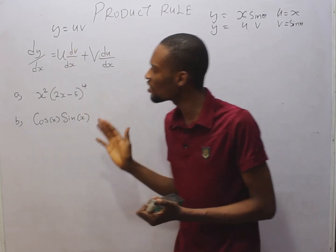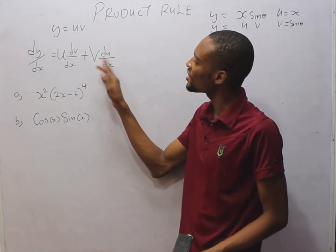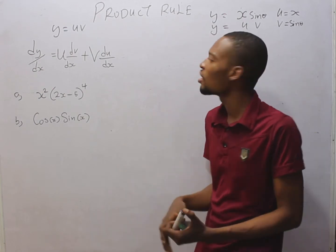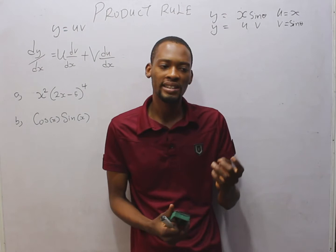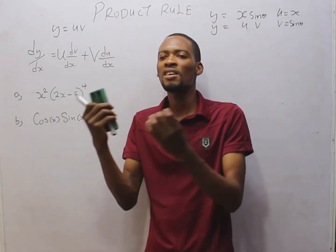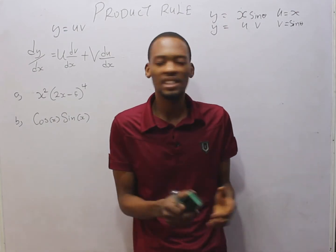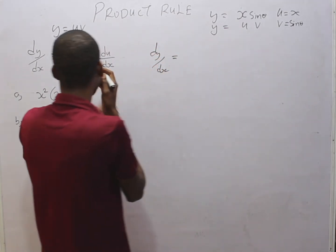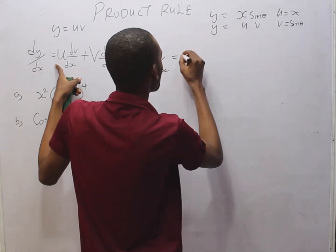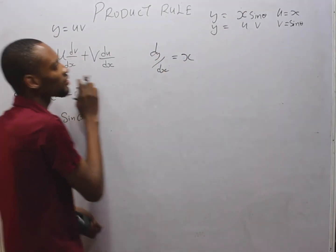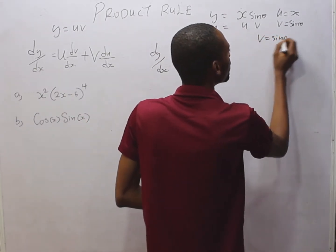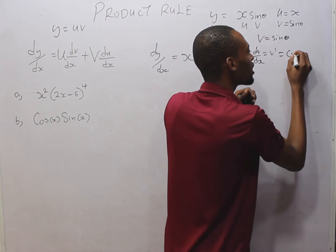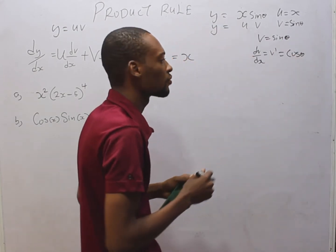u·(dv/ds) means keep u constant and differentiate v with respect to s. v·(du/ds) means keep v constant and differentiate u with respect to s. In essence, when differentiating a product: keep the first one constant and differentiate the second, plus keep the second constant and differentiate the first. For x·sin(θ), dy/ds equals u times dv/ds. If v is sin(θ), then dv/ds equals cos(θ).